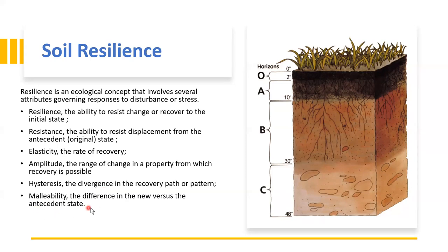Malleability is the difference between the new versus the original state. When your soil is disturbed and then recovered through its resilience, it may not come back to exactly the original stage. For example, if the soil had 10 points and was disturbed to 7 points, the soil recovers toward 10 points again but it reaches 9.5. That 0.5 difference is basically malleability — when the soil has recovered it still has a difference from the original state.